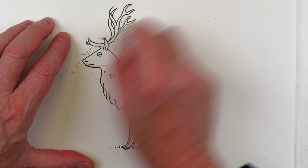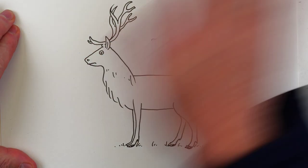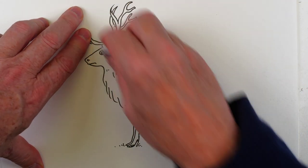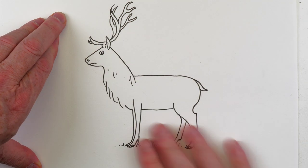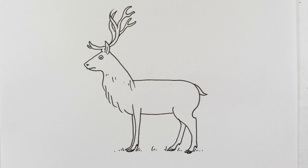When you are sure the ink is dry, then erase those pencil lines. And that is how you draw a red deer.